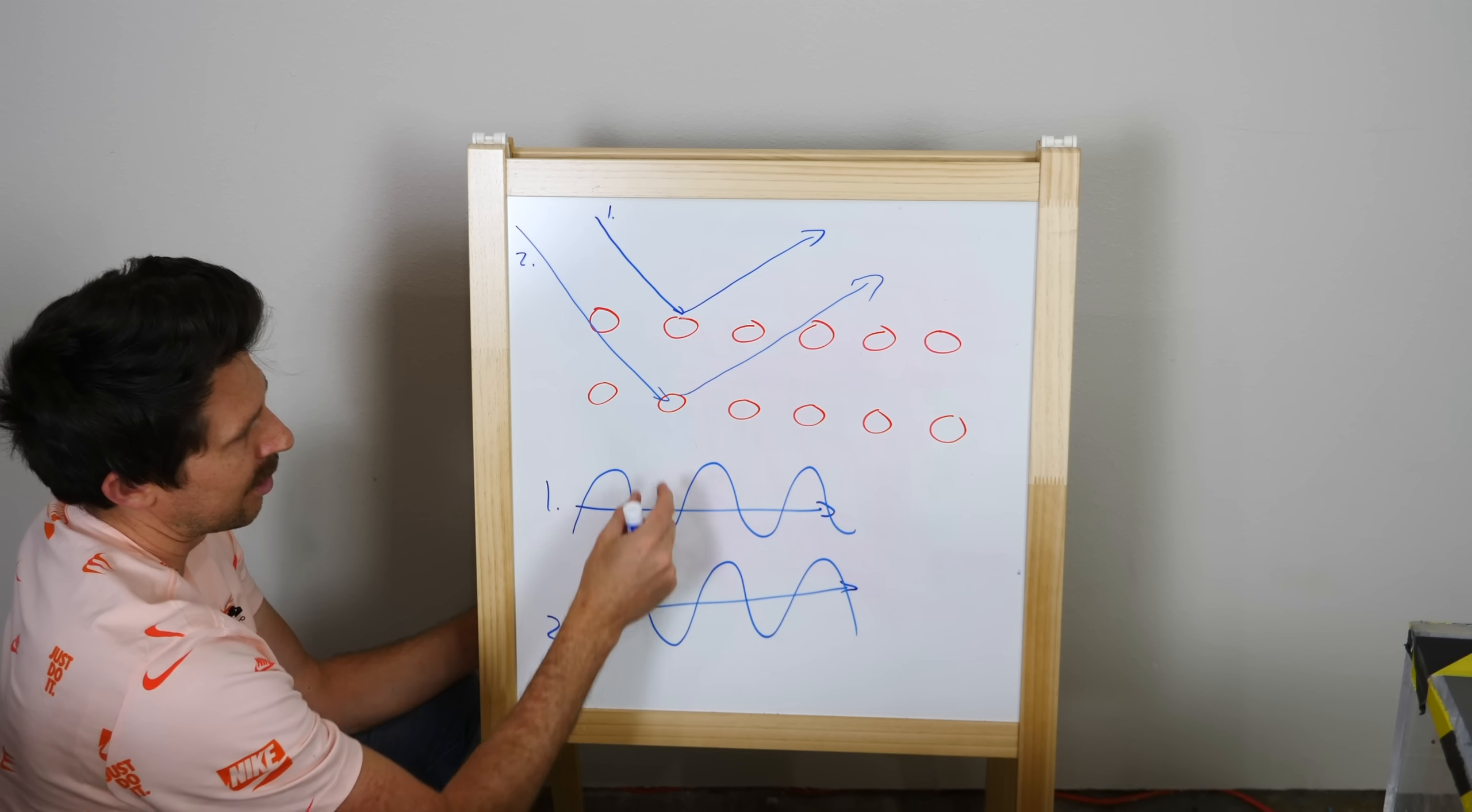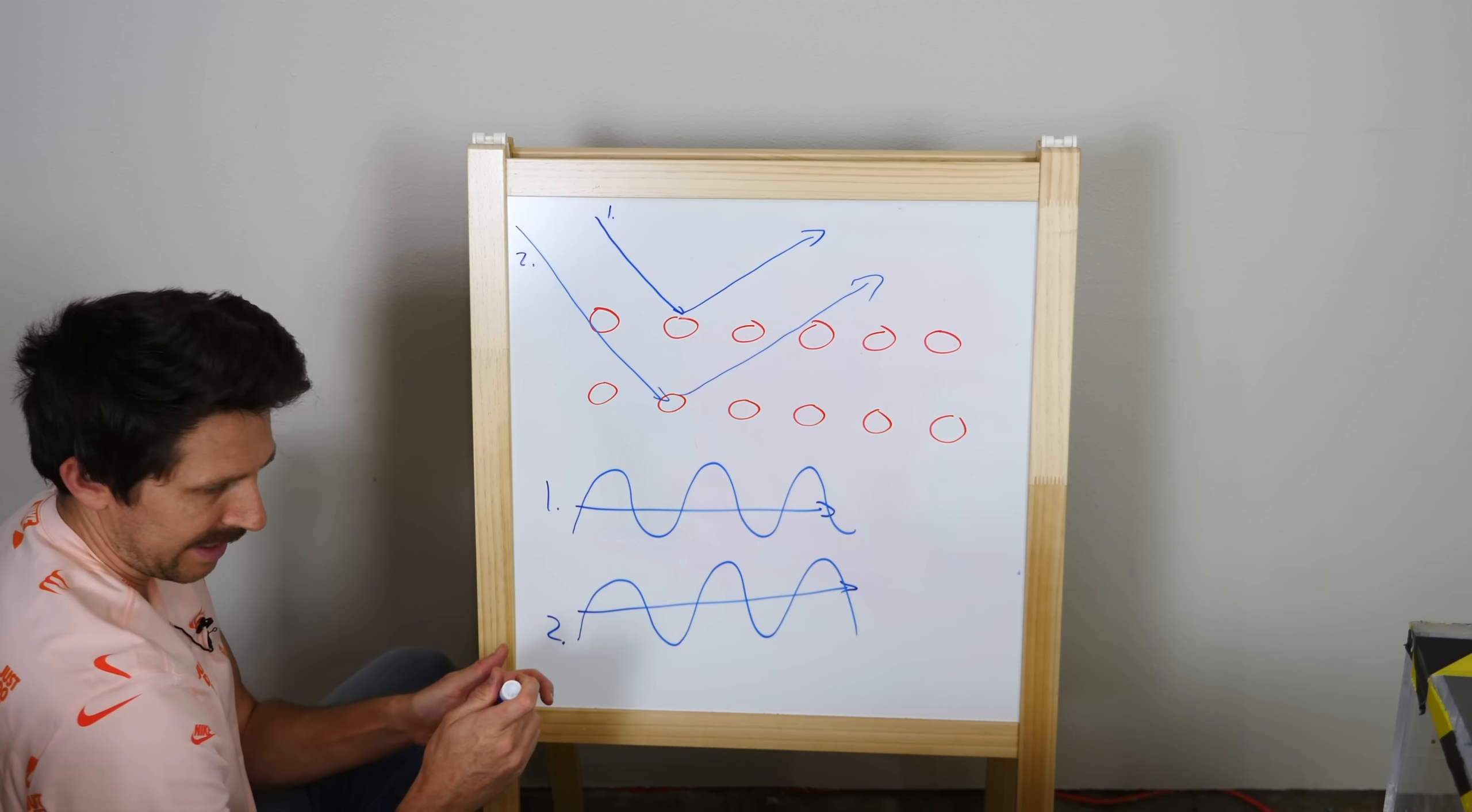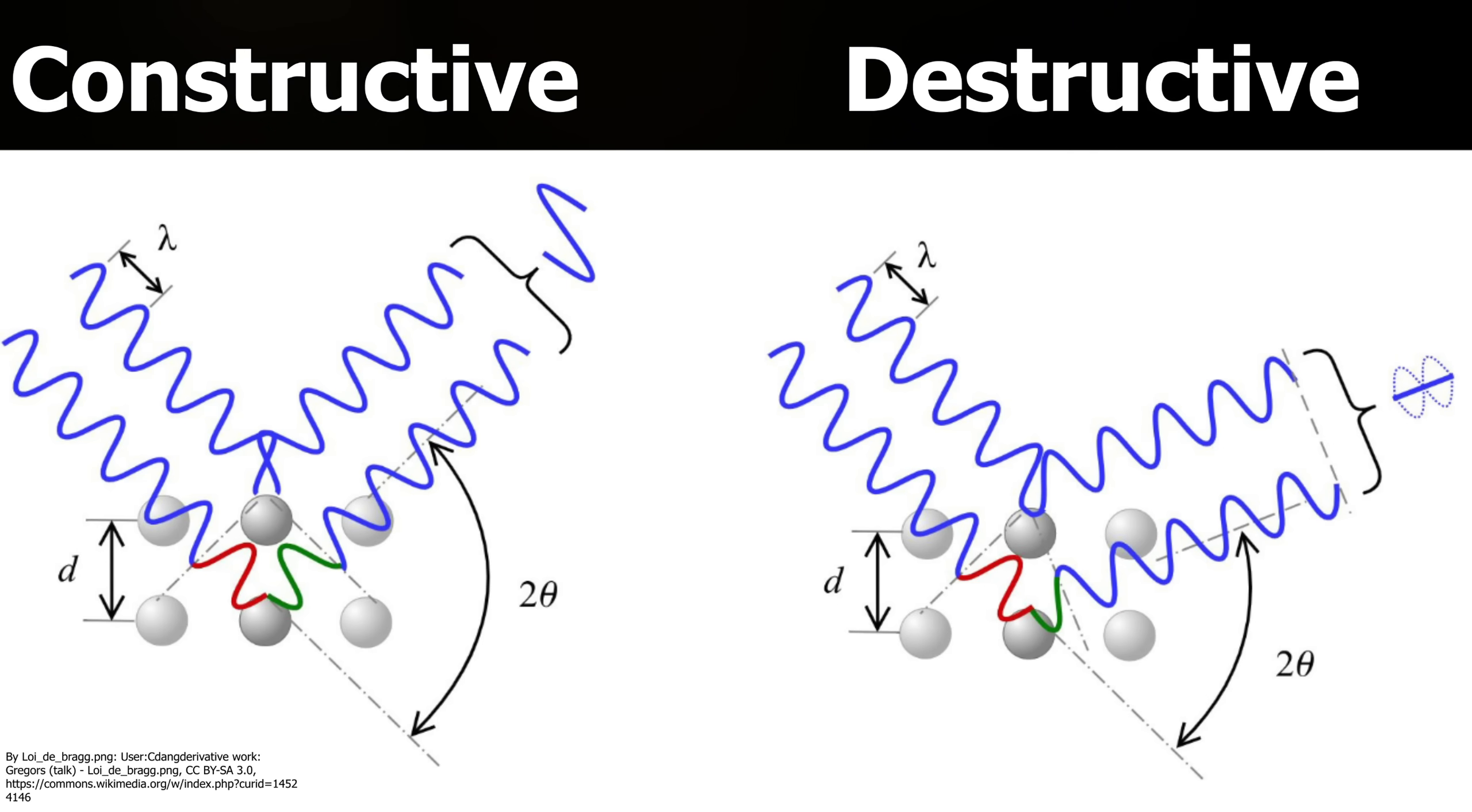And if it's a certain multiple of the wavelength, it'll shift this wavelength a little bit. So depending on how close the second layer of atoms is, or depending on the angle that the light strikes it, you can see that you can get either constructive or destructive interference of that light wave.